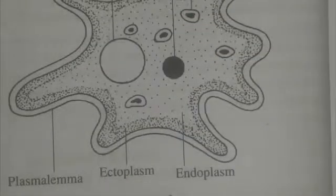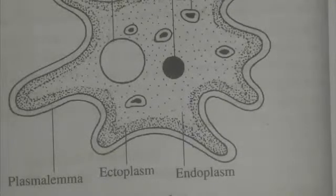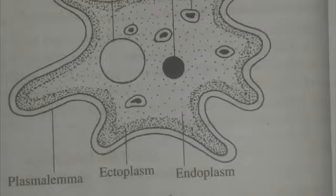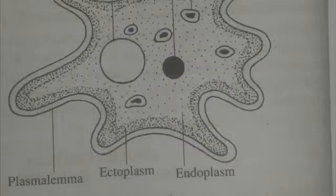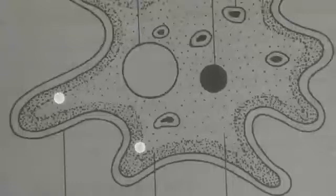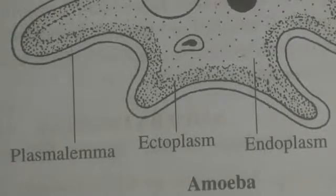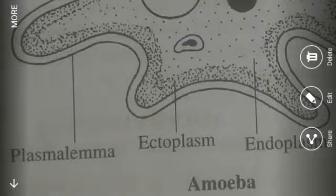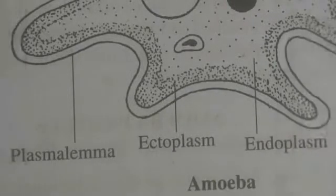Today we discuss about Amoeba Proteus. Amoeba is a free-living fresh water protease coming under phylum Rhizopoda. Its body is minute and microscopic and covered all around by a selectively permeable membrane called plasmalemma or plasma membrane. The body has no constant shape.